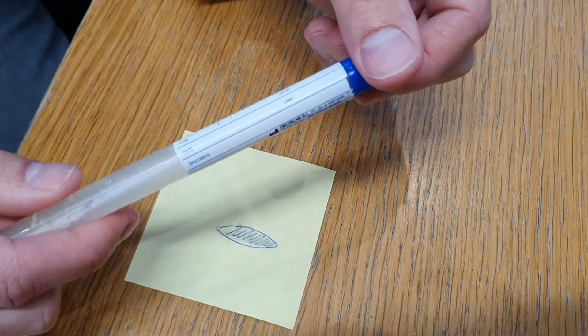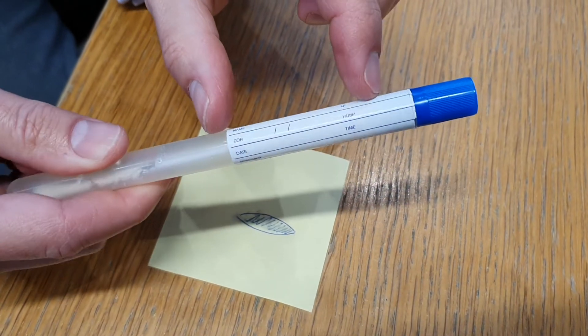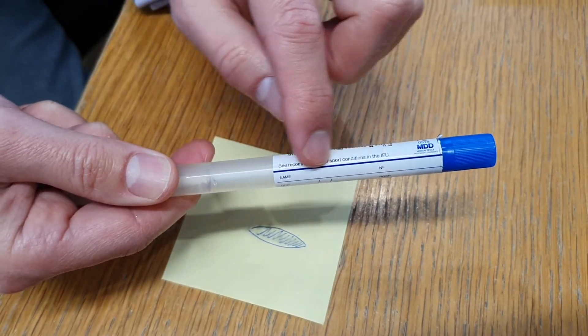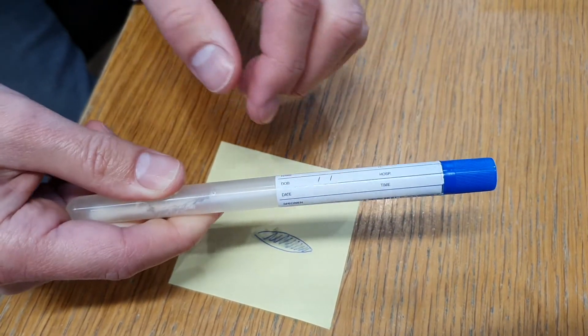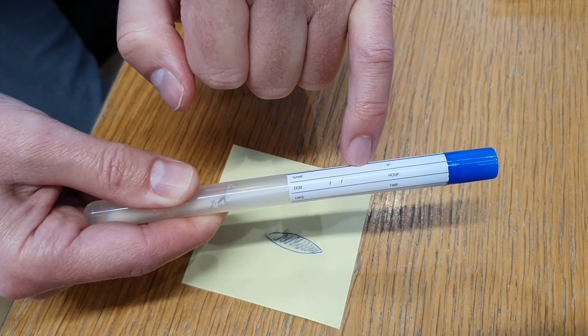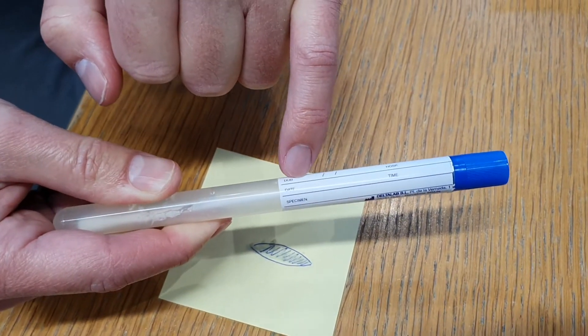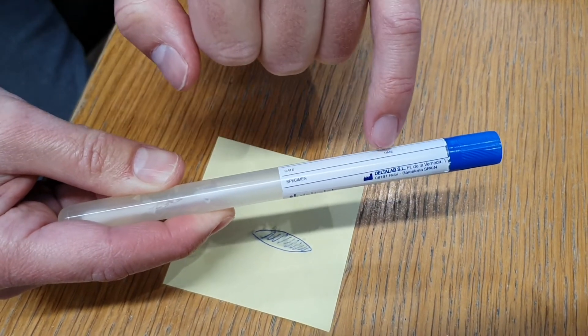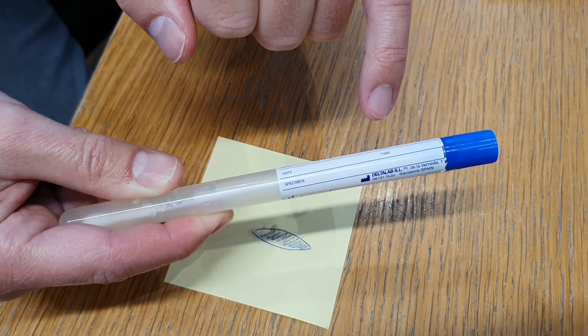You will then need to either put the sticker that's been provided to you over the top of the culture medium tube, or carefully write the name, first name and surname, and the date of birth, as well as the date and time that you took the sample.